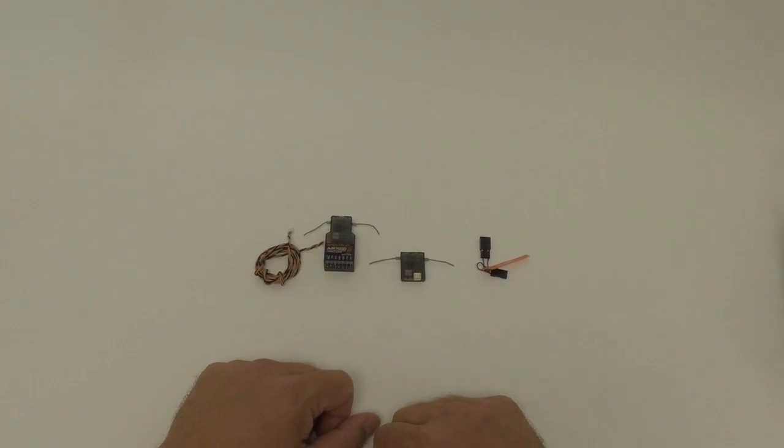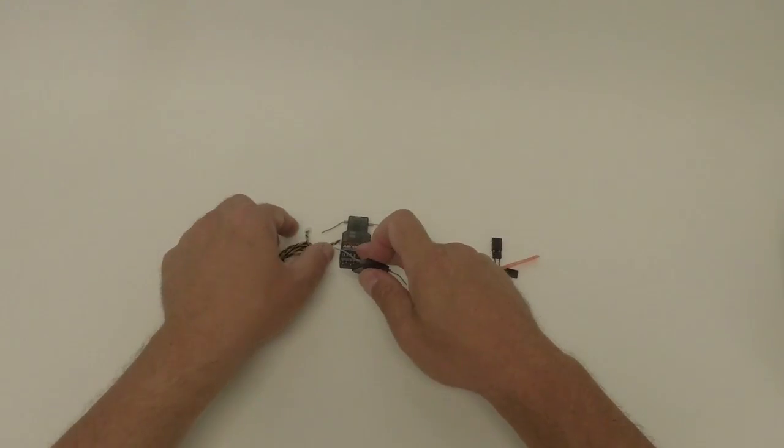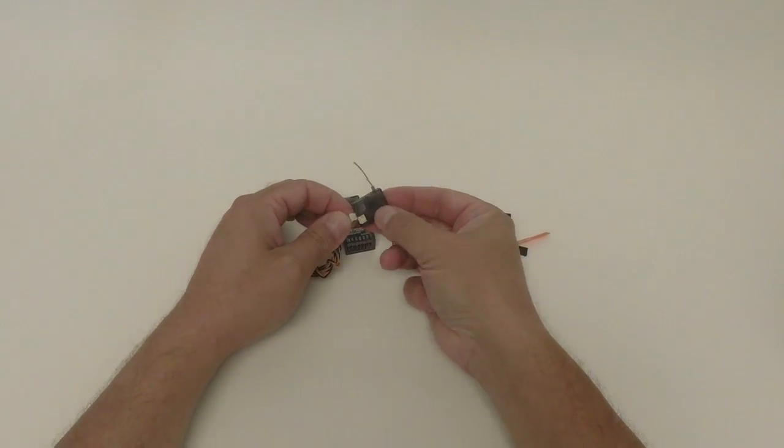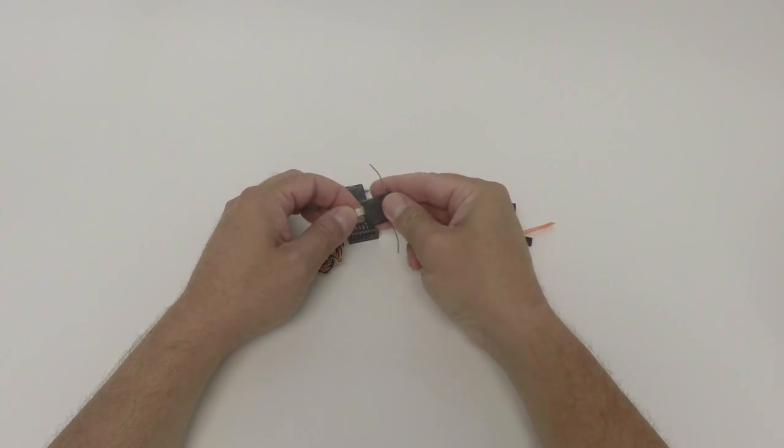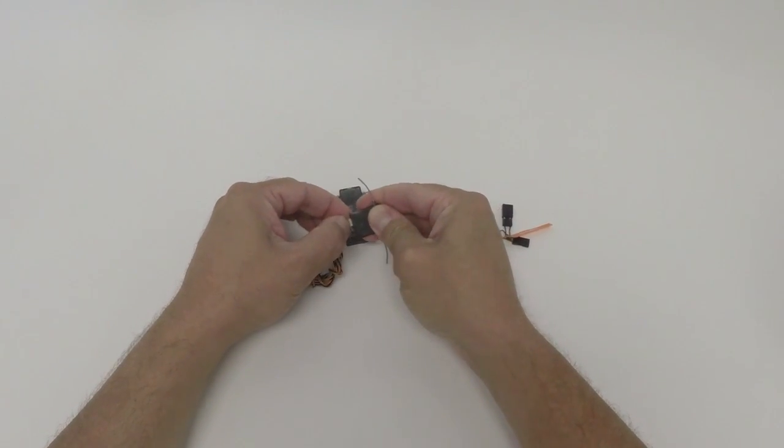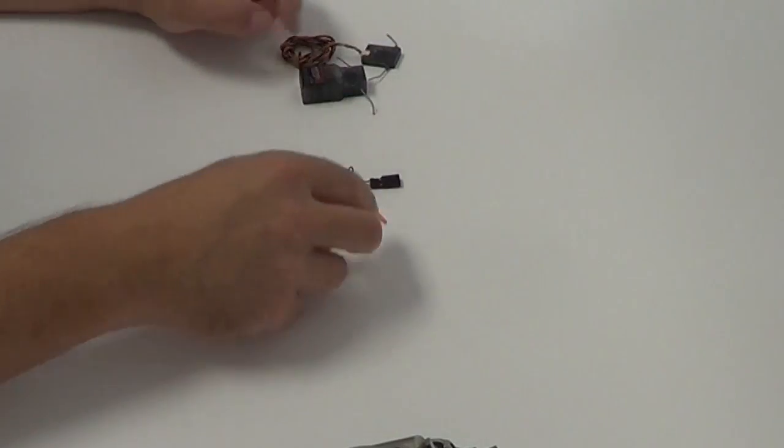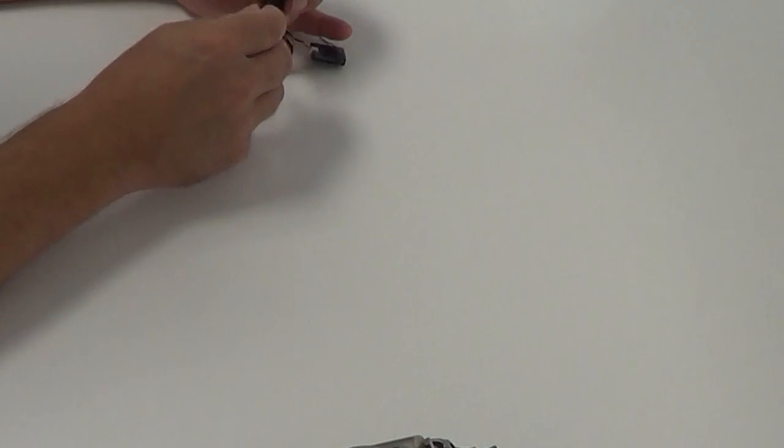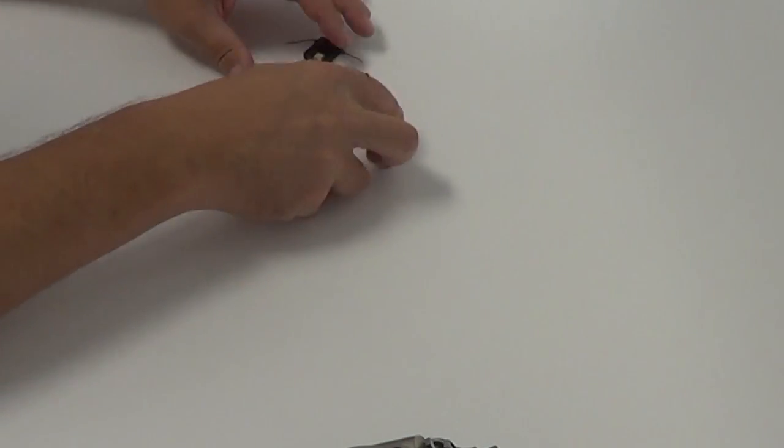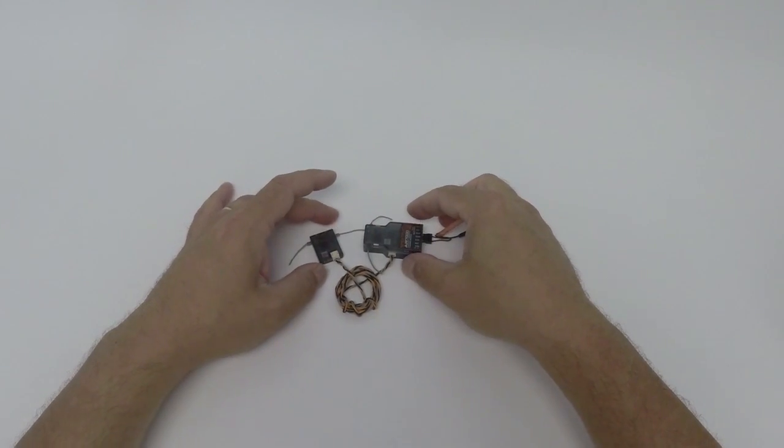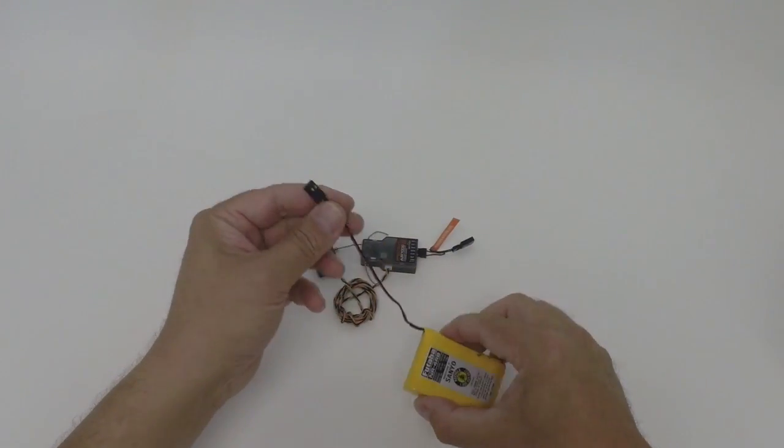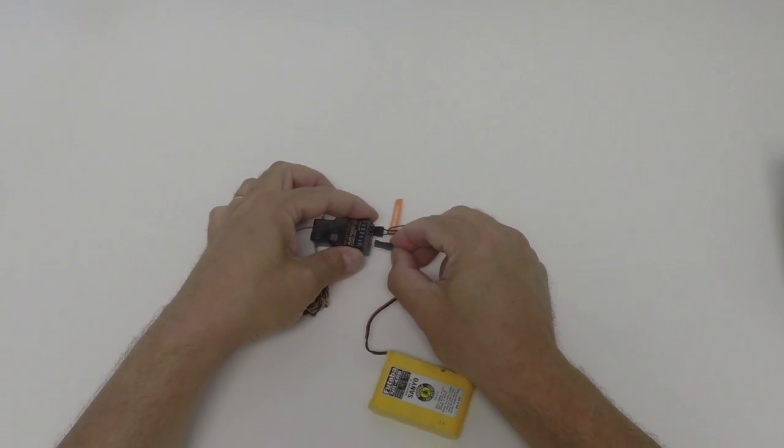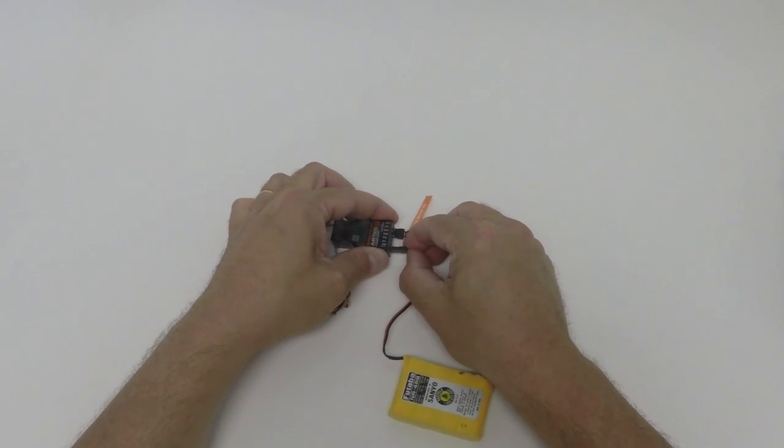The first step is to connect the Satellite Receiver to the AR7000. There is only one way you can plug this in. Then use the bind plug, find the bind port on your AR7000 and connect the bind plug to it, and use the external battery to power the whole system up in binding mode.